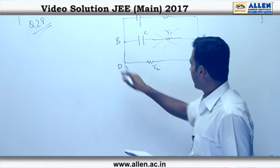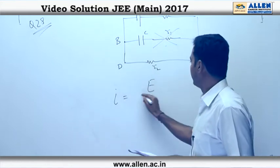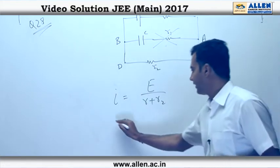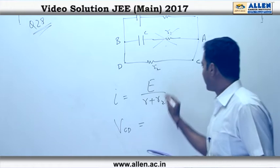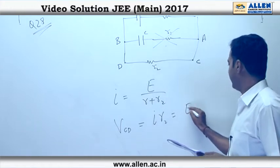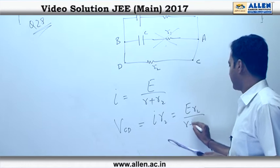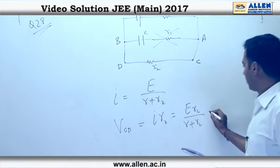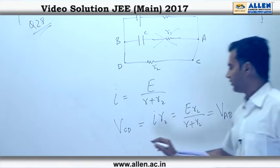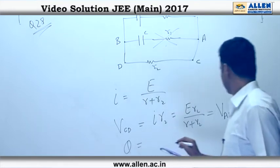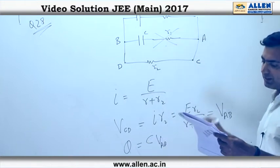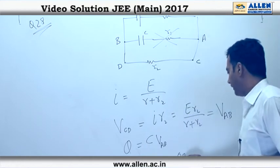The current in the circuit is given by E upon R plus R₂, while the potential difference across CD will become I into R₂, which is ER₂ upon R plus R₂. The same potential also holds for VAB. The charge on the capacitor becomes C into VAB. On putting the values, option 1 is what we have.